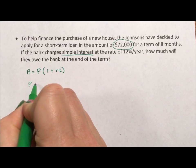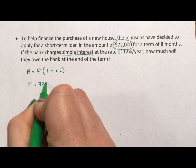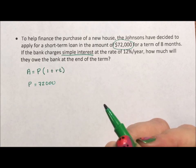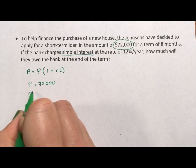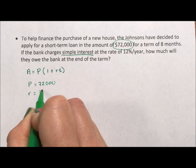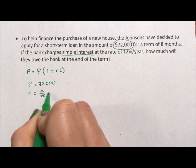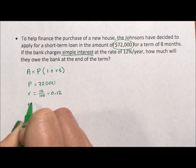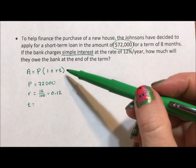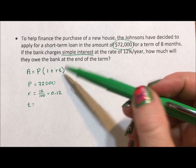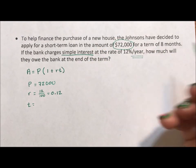For P, I'm going to use $72,000. r is the interest rate written as a decimal, so essentially 12 per 100, or 0.12. And t—this equation generally is yearly interest and this says per year—so we know time needs to be in years. Eight months is 8/12 of a year, and I'm just going to leave it as that fraction.